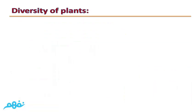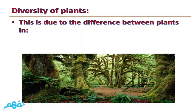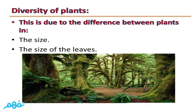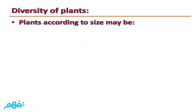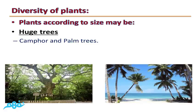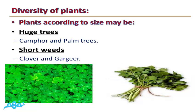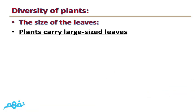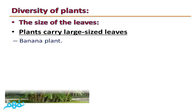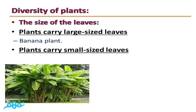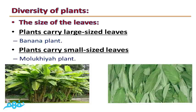Diversity of Plants is due to the difference between plants in their size and the size of their leaves. Plants according to size may be huge trees, such as Comfort and Palm trees, or short weeds, such as Clover and Gargir. Plants may carry large-sized leaves, such as the Banana plant, or small-sized leaves, such as the Molokhaia plant.